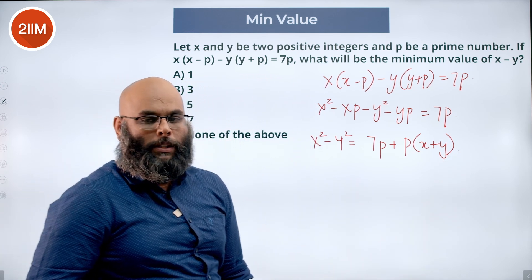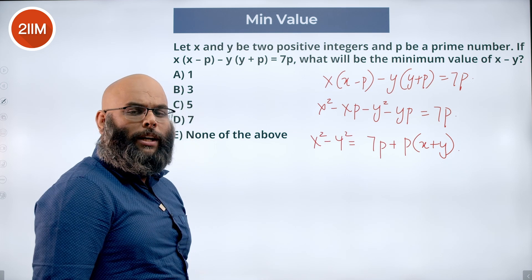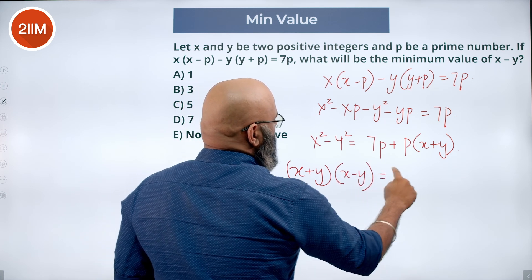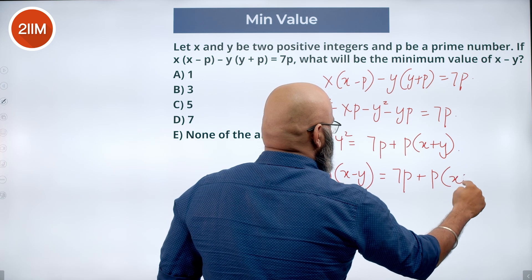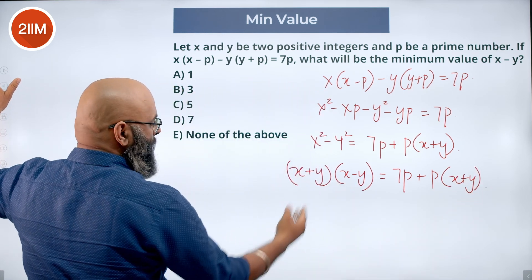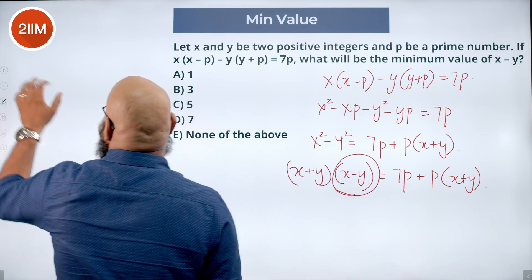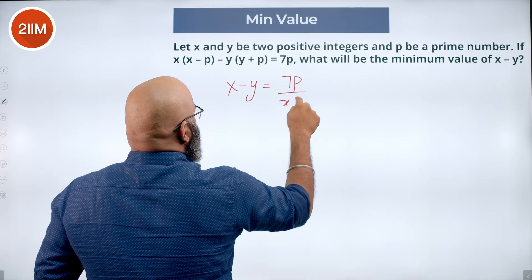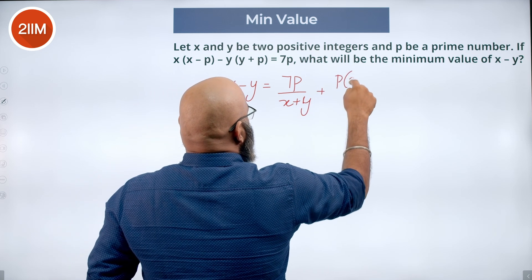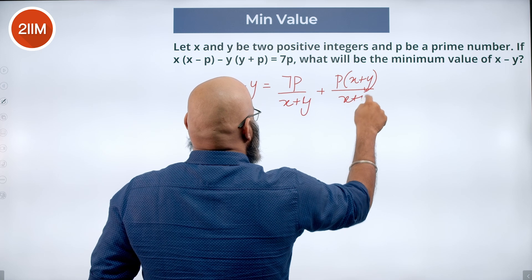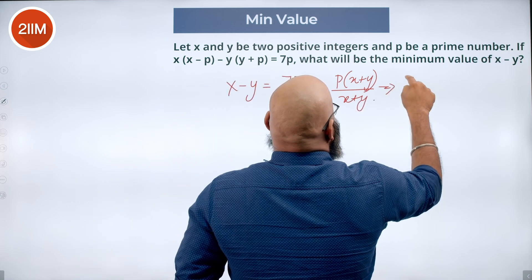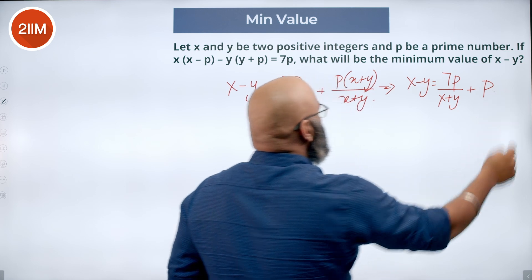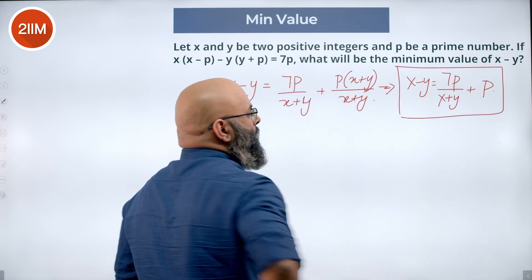Let's keep the variables separate and the prime number separate. Now x squared minus y squared can be written as (x plus y) into (x minus y) equal to 7p plus p into (x plus y). Taking x plus y over to the other side, you will have x minus y equal to 7p divided by (x plus y) plus p. So this is going to be the value of x minus y at any instance.